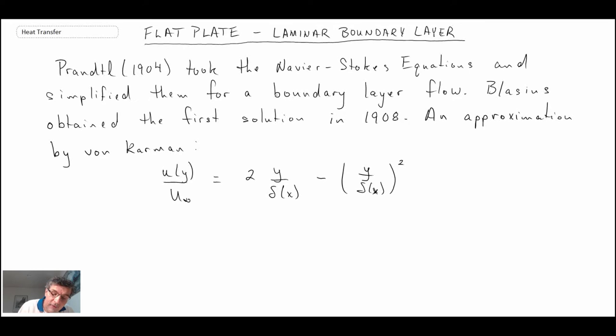Looking at the velocity profile, it would be something like this. Here's our flat plate. Remember, X is going in the direction of the flow. Y, when we're looking at boundary layers, is always normal to the plate. And then we have our delta of X and our velocity profile.